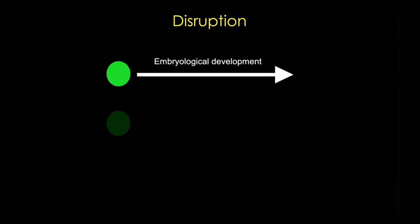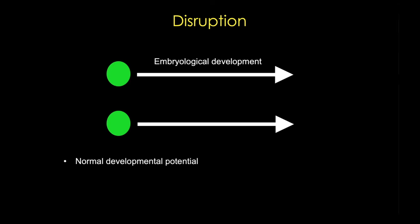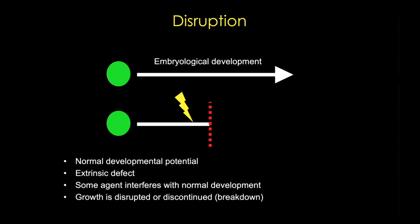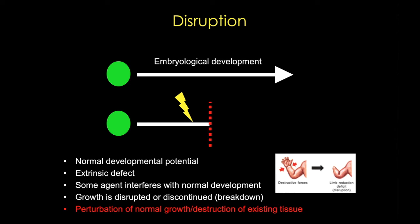Disruptions also have a normal primordium and normal developmental potential. Again, we have an extrinsic event or defect, and this event is going to interfere with normal development — the growth process becomes disrupted or discontinued, and there can actually be breakdown of tissue. This is a perturbation of normal development with actual destruction of existing tissue. A deformation can lead to a secondary malformation, or it could be the start of a sequence. The consequences depend upon the timing of the disruptive event. One example is a constriction of a developing limb that disrupts the growth, breaks down the tissue, and leads to a missing part of the limb.